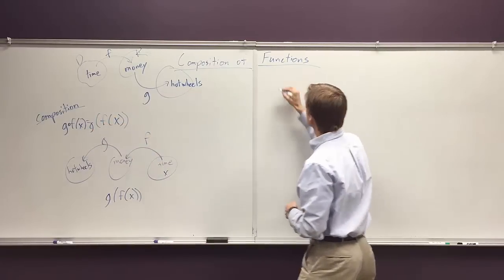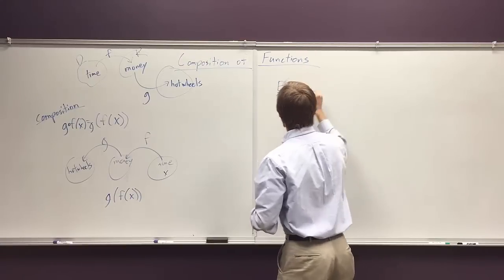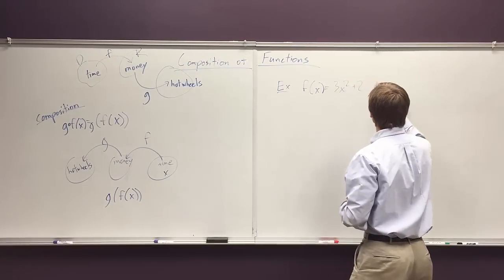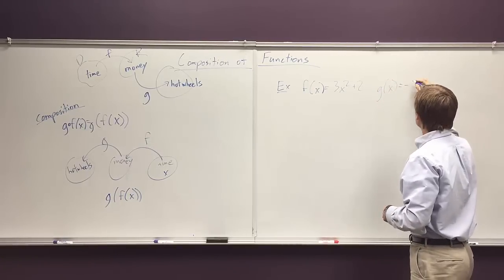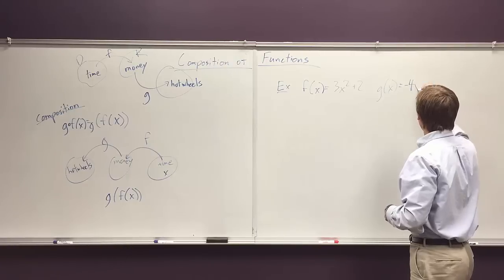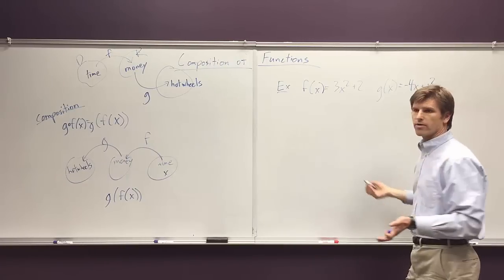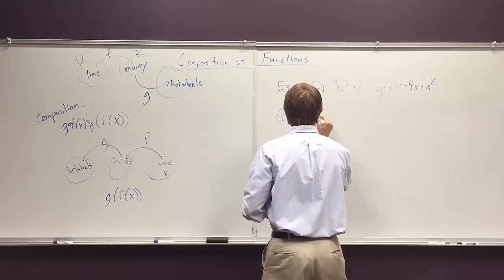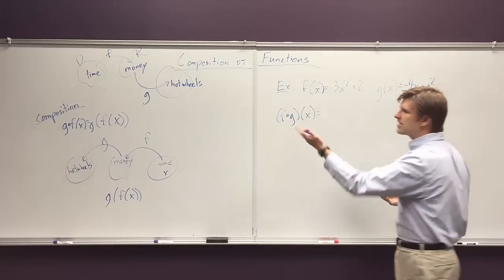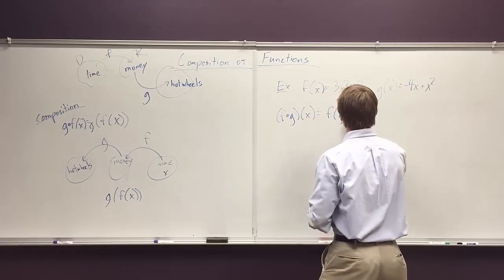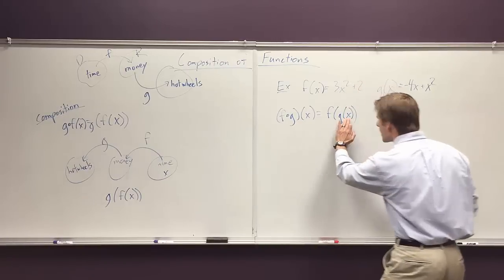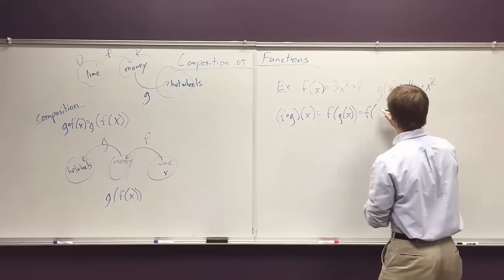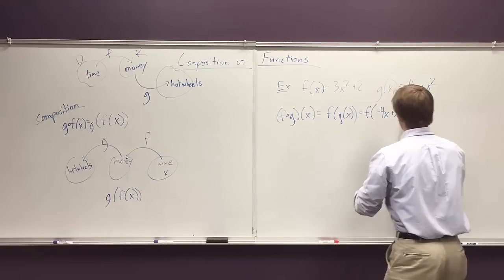Let's look at an example. Let's imagine f of x is 3x squared plus 2, and g of x is negative 4x plus x squared. What's f composed of g of x? Well by definition it's f of g of x, but what is g of x? Can you see by definition that's f of negative 4x plus x squared.